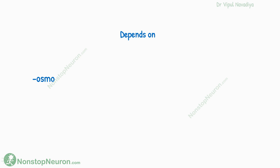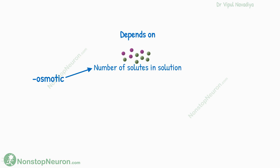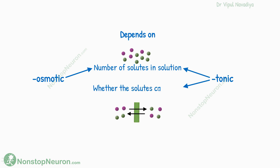Now, in contrast to osmolarity, which depends only on the number of solutes in the solution, tonicity depends on both the number of solutes as well as whether these solutes can cross the cell membrane or not.